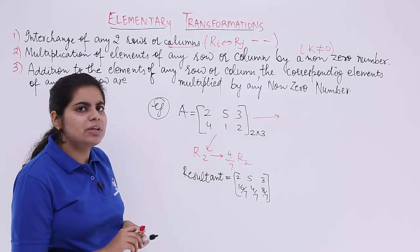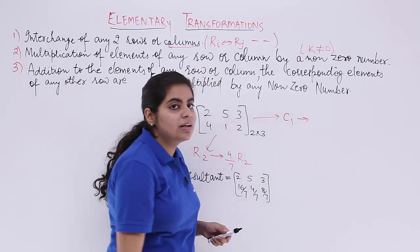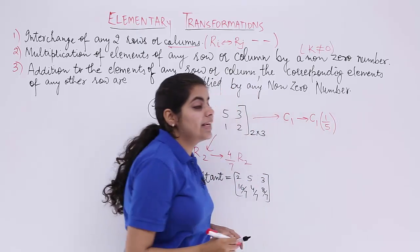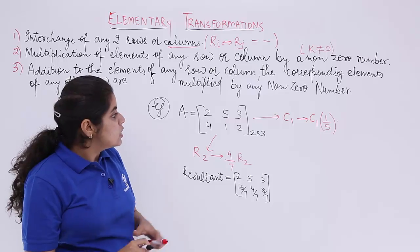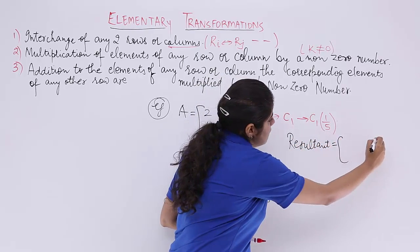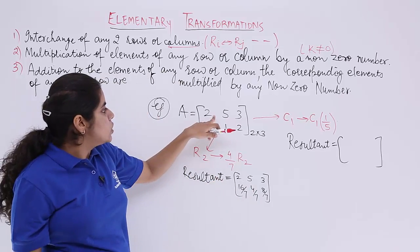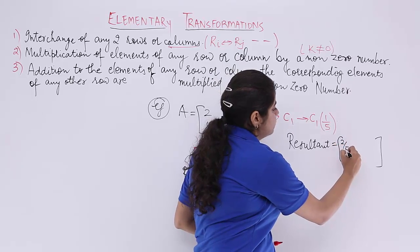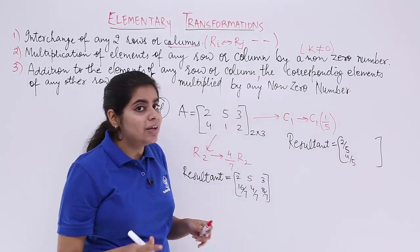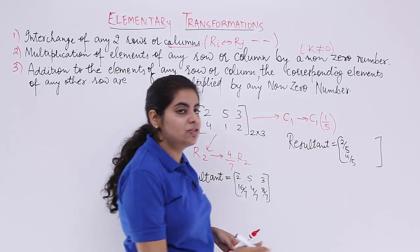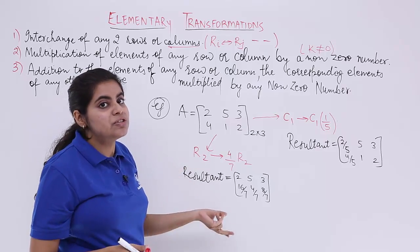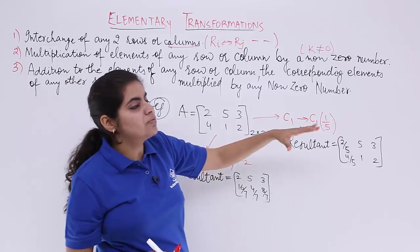For the column operation, suppose C1 → (1/5)C1. Only column 1 changes; columns 2 and 3 are copied as is. Applying the operation: 2×(1/5) = 2/5 and 4×(1/5) = 4/5. The resultant matrix is [2/5, 5, 3; 4/5, 1, 2]. This completes the second elementary transformation — one for rows, one for columns.